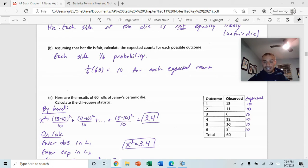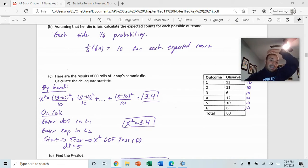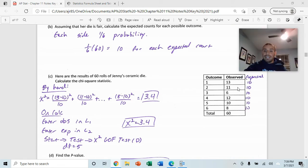Here are the observed counts. This is what actually happened when she rolled the die 60 times. She got one 13 times, a two 11 times, a three 6 times, and so on. And here are the expected counts right next to it. In order to find the chi-squared test statistic, you're going to take each observed value minus the expected value, square it, and divide it by the expected value. Then you're going to sum all of those up. So, we're going to take 13 minus 10 squared divided by 10, plus 11 minus 10 squared divided by 10, and so on and so forth. You'll get a chi-squared value of 3.4 if you do it by hand.